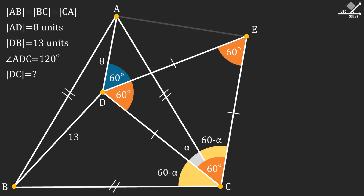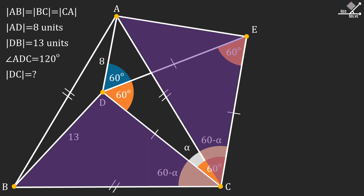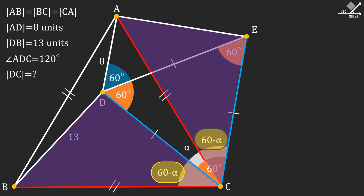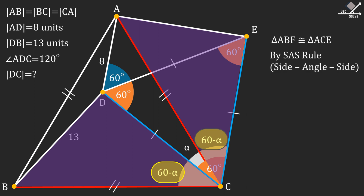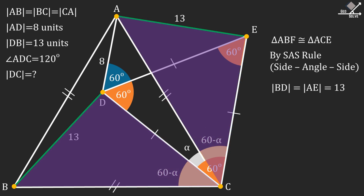Now let's connect point A to point E. From here, let's focus on these two shaded triangles. As you can see, these two triangles have one same angle, namely 60 minus alpha. And also the lines which are forming the same angle are equal in length, namely the red and blue lines. So we can conclude that these two triangles are congruent by the SAS rule. Therefore, the remaining sides shown with green lines must also be equal, which makes line segment AE also 13 units.